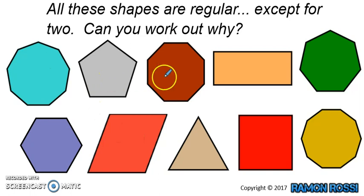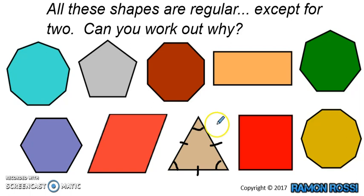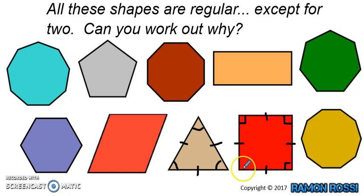Every other shape here has all of its sides equal in length — such as this triangle. We can show that all sides have the same length, and on the inside they all have the same angle. This is an equilateral triangle, but we could also call it a regular triangle. The square is also regular because every side is the same length and all the angles on the inside are the same — they're all right angles.